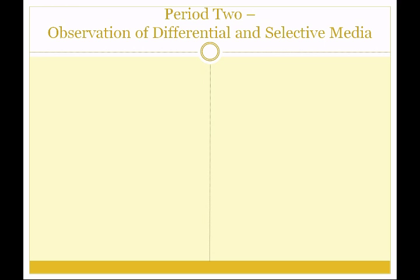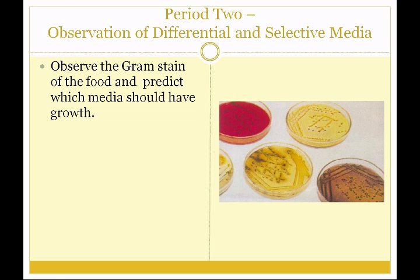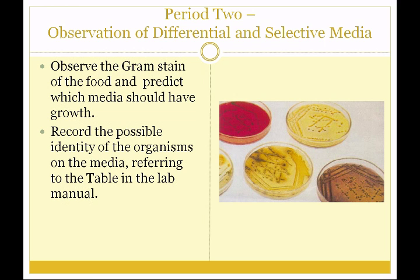You are also going to be observing the differential and selective media that you T-streaked from the food samples. First, observe the gram stain of the food and predict which media should have growth. If you see gram-positive cocci in the food specimen, you would expect growth on the PEA and the MSA. If you see gram-negative rods, you would expect growth on the SS, and perhaps also on the EMB and MacConkey. Record the possible identity of the organisms on the media, referring to the table in the lab manual.